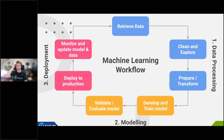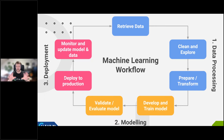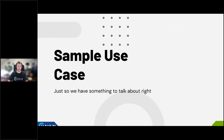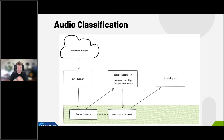Every machine learning engineer has heard of this — the main ML cycle. You retrieve the data first, then clean and explore it, then prepare and transform it. That's the data pre-processing stage, which takes by far the most time. Then we have the modeling phase and the deployment phase. I'm including this colorful diagram so you can always follow along and know where we are during the talk. The approach I'll use is a sample use case — something real and no-nonsense.